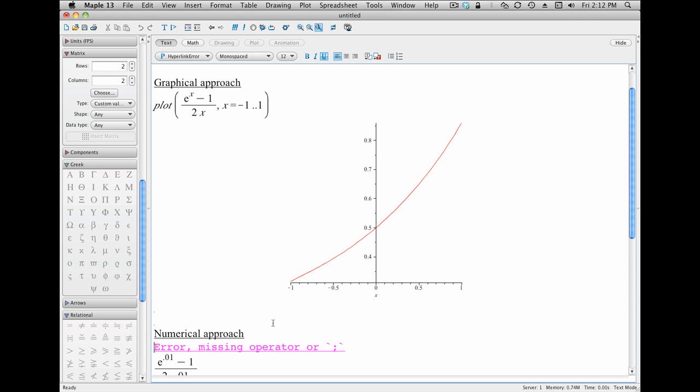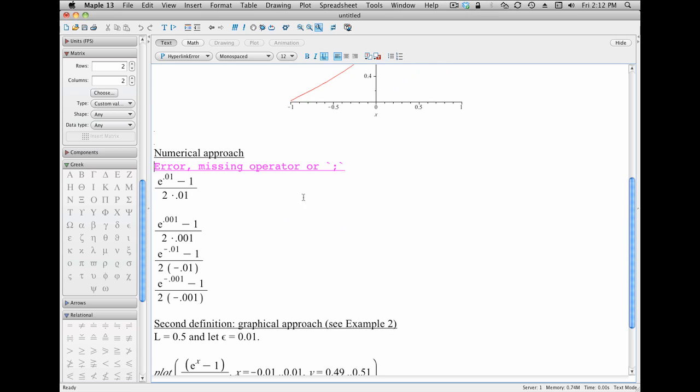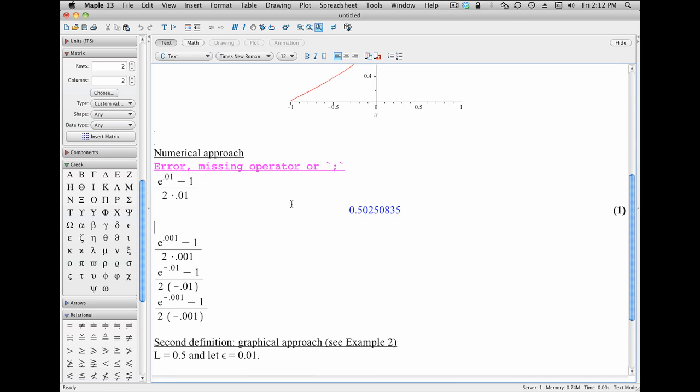Let's check that by finding a numerical approach. I'm sorry, folks. I've got this weird command in here. Maple is sometimes frustrating. Let's see if we can make this work. What I've done in this case is I've plugged in a number close to 0, 0.01, into my function. And I'm asking Maple, what is that equal to? And Maple says, yeah, that's close to 0.5.